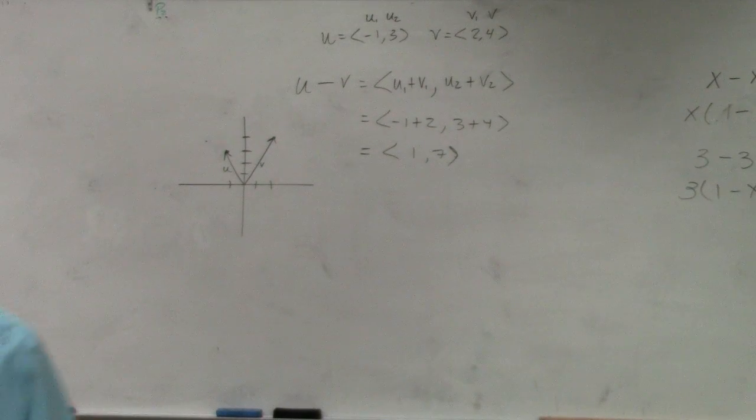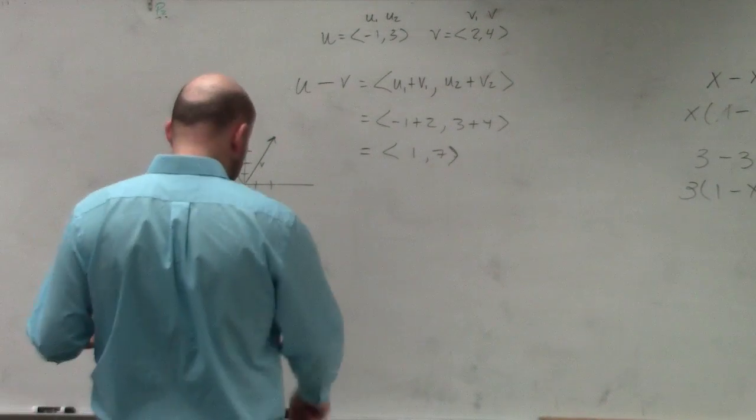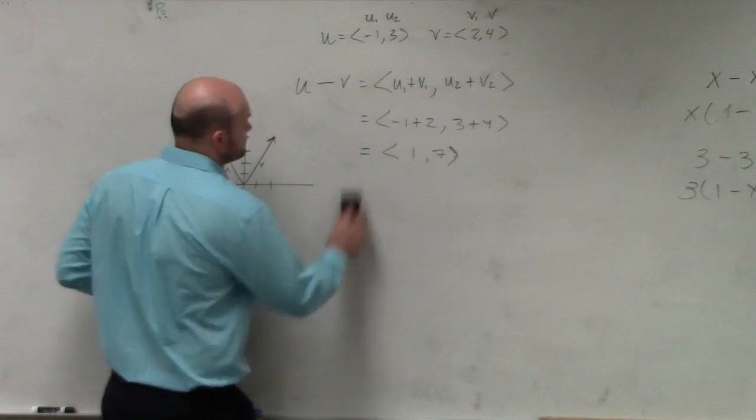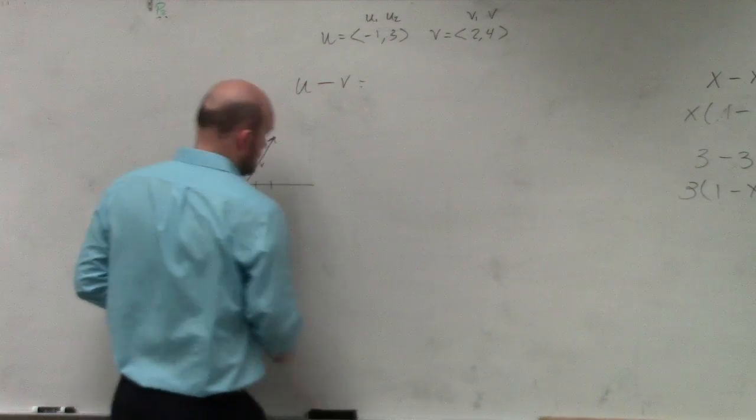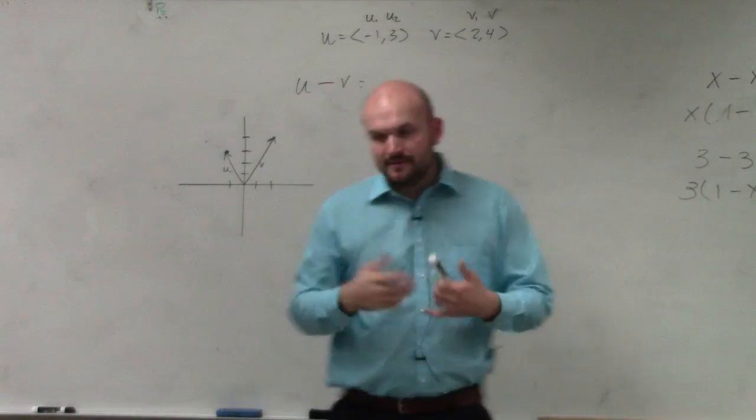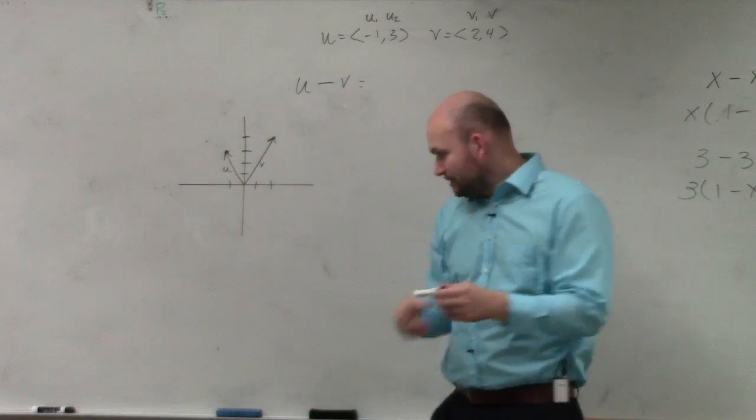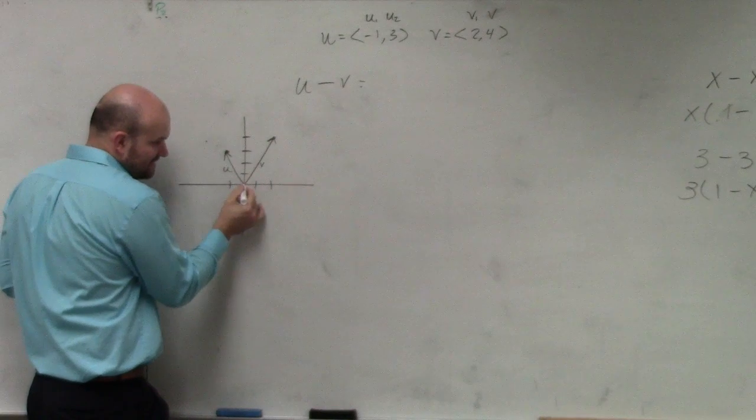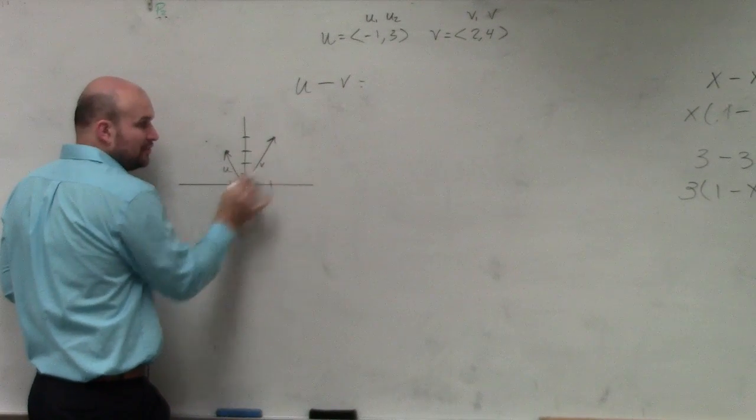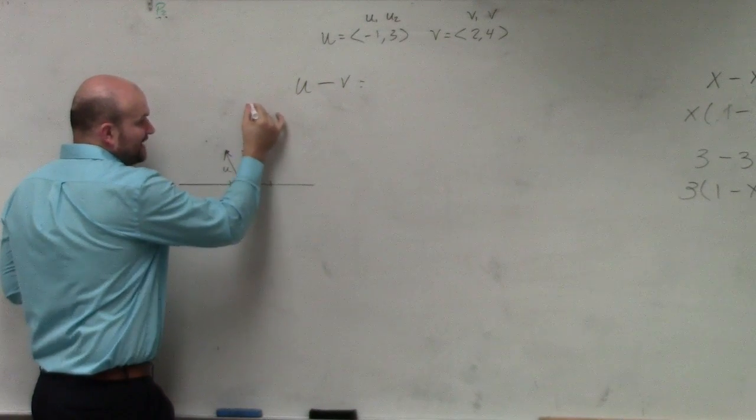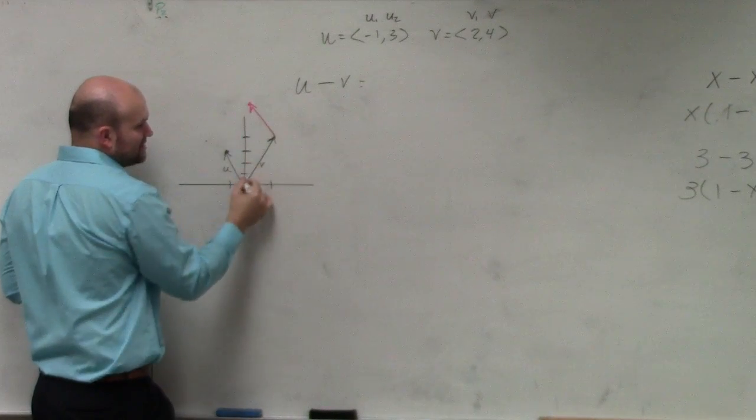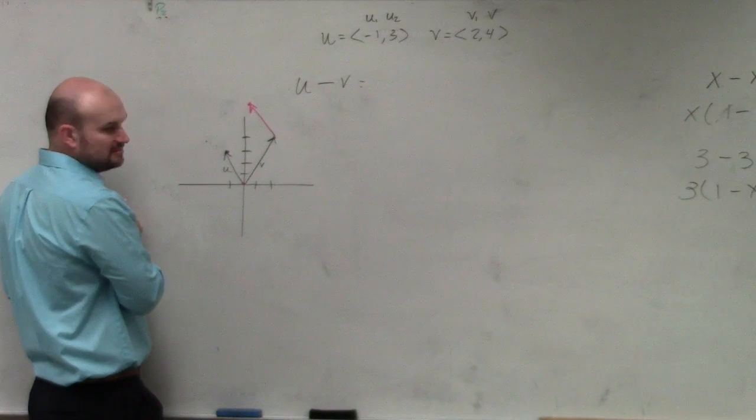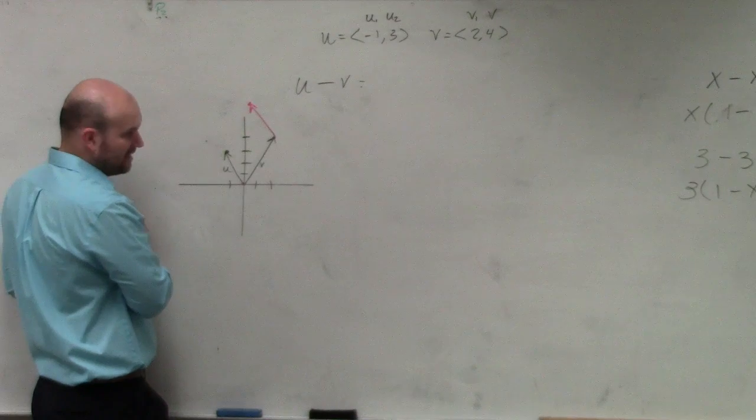The best thing that I want you guys to think of a subtraction problem is, all right. So in addition, we are basically using this tail-to-head method. We are basically taking the tail of u and adding it to v, and therefore getting this resultant vector that was right there, right? You guys agree with me? That's kind of like what we did, right?